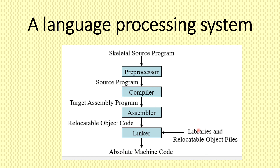In a language processing system, we have a source program. The preprocessor removes macros, then the compiler converts it to assembly level language. The assembler then converts the assembly level language into object code. This object code is linked with the library and loaded into memory for execution.